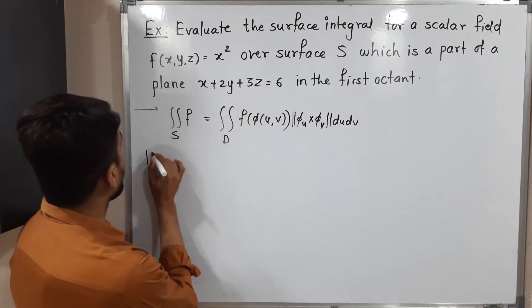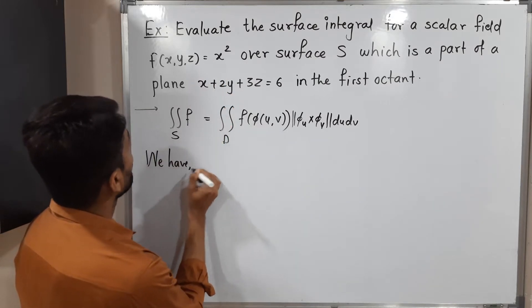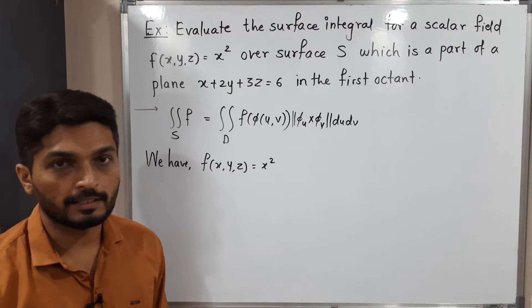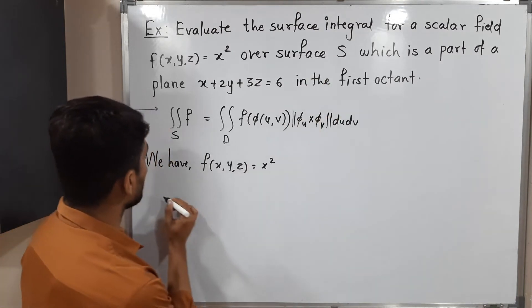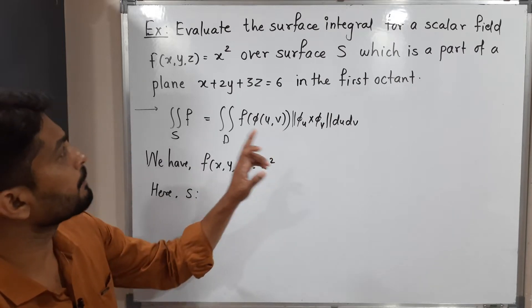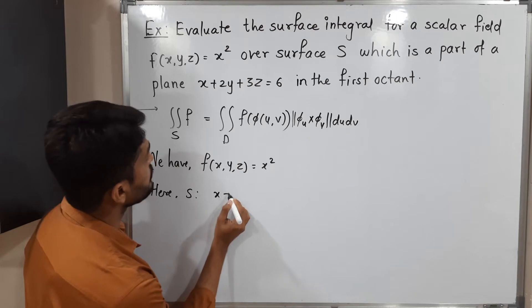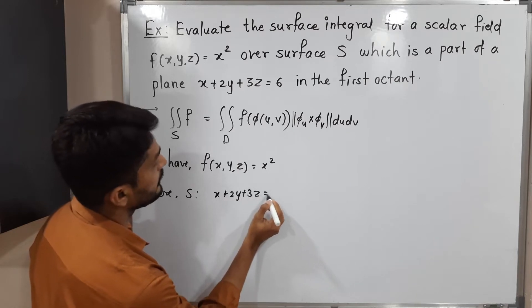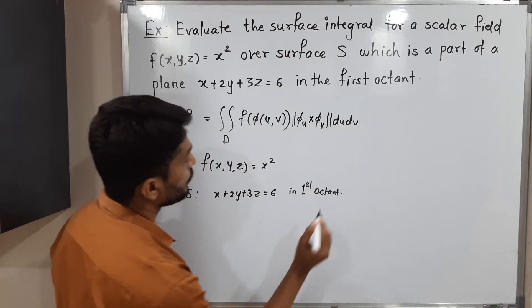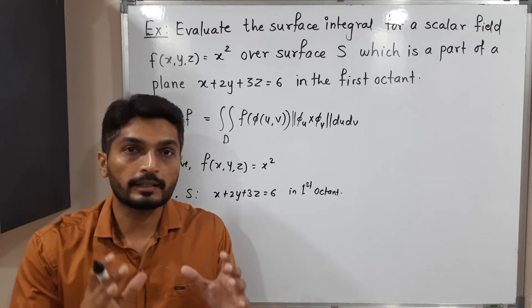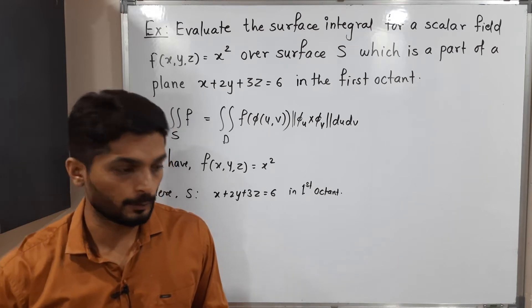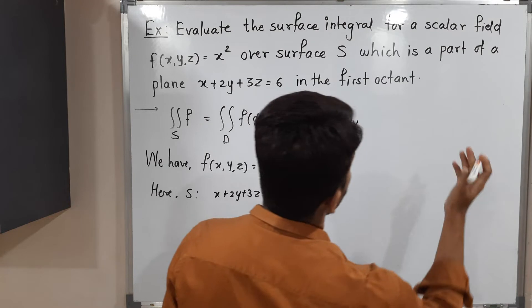Let us write F first. We have F(x, y, z) = x², which is the given scalar field. The surface S is a part of a plane: x + 2y + 3z = 6 in the first octant. We have a plane and we must consider only that part which lies in the first octant, meaning where the X, Y, and Z axes are positive.